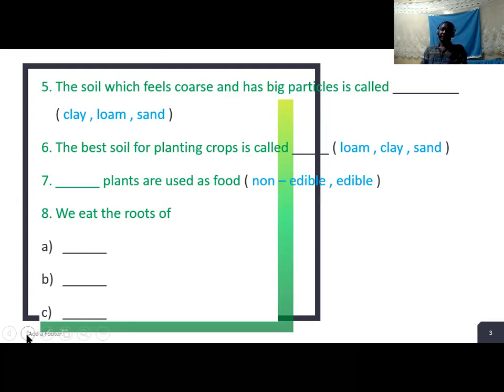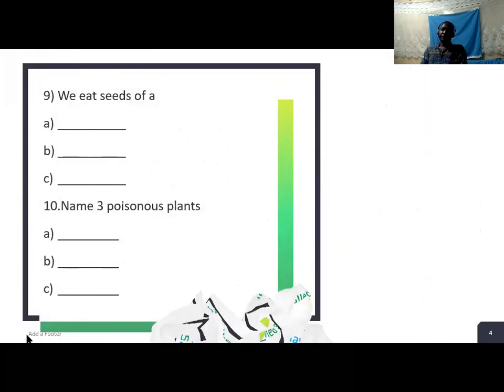Question 8. We eat the roots of - you name three plants which we eat their roots. Question 9. We eat seeds of dash. You need to name three seeds that we eat.